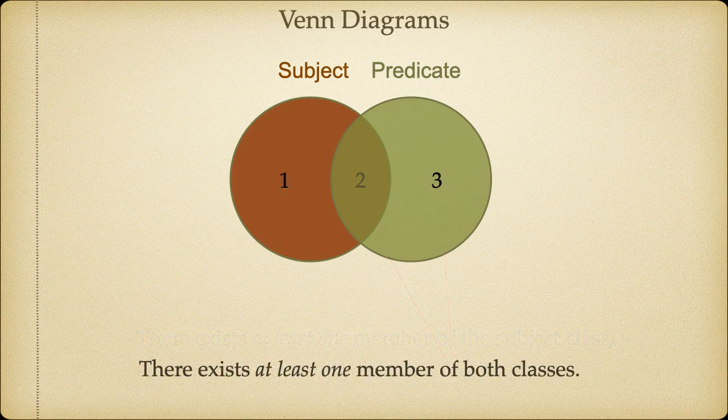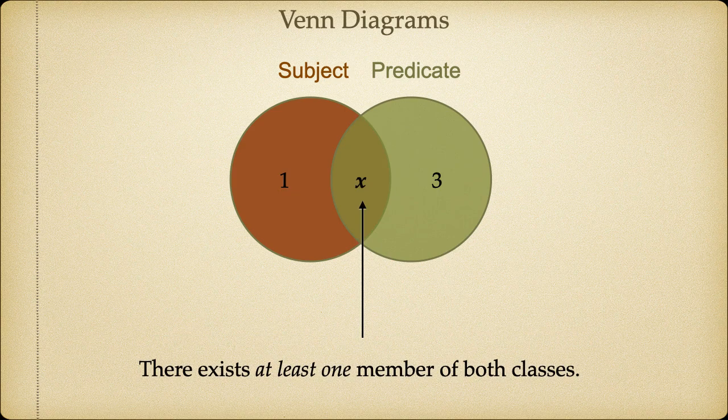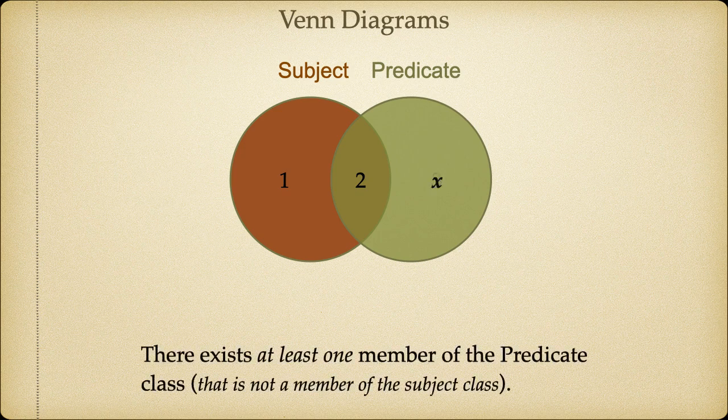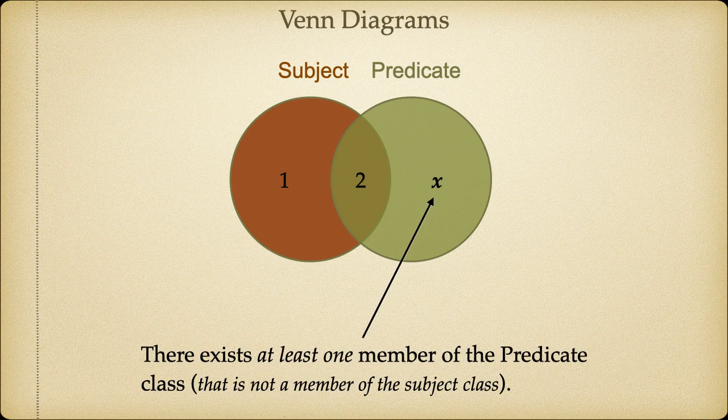If we wanted to indicate the existence of one thing that is in both sets, we'd put an X in Region 2. Similarly, if we wanted to indicate the existence of something that existed in the predicate class that was completely separate from the subject class, we'd put an X in Region 3.